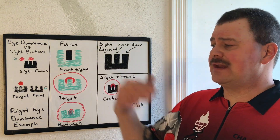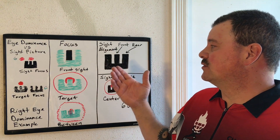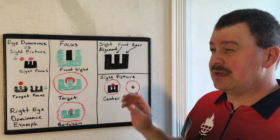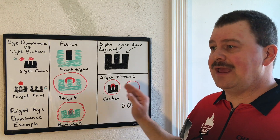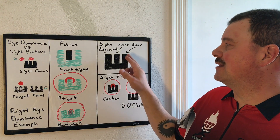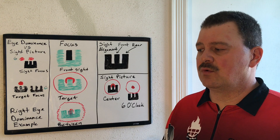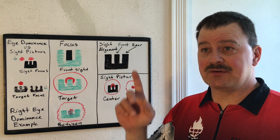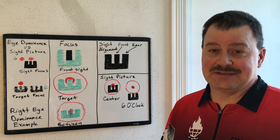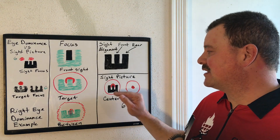That brings us to the next step: what is sight picture versus sight alignment. Sight alignment is alignment of the sights regardless of what target you're aiming at. A sight picture is what you're aiming at along with sight alignment. In this reference, the sight alignment is always going to be assumed — we're not going to talk about deviated sights where the front sight might be displaced left, right, up, or down. We'll assume for this video that they're always aligned. For our sight picture, that means sights on a target.